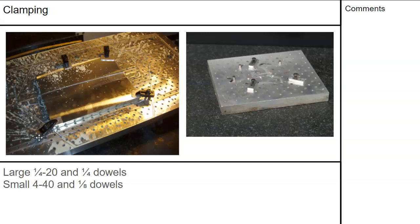A larger plate will use more clamps to make sure we're not getting harmonic vibration as the tool is cutting. Round tools spinning generate that frequency, and if we don't have enough constraint on our plate, we're going to see chatter marks and the finish will start to suffer.